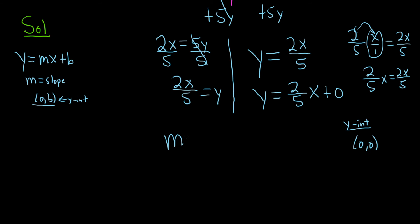Our slope is m, which is 2 over 5. We can think of this as rise over run.